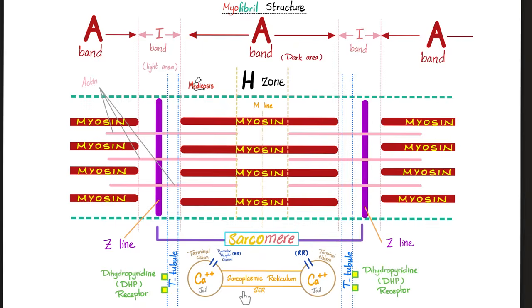Here we have the sarcoplasmic reticulum. This is a modified smooth endoplasmic reticulum. We had two types of ER: rough endoplasmic reticulum and smooth endoplasmic reticulum. The sarcoplasmic reticulum is a modified smooth endoplasmic reticulum. The rough endoplasmic reticulum has a totally different function — it makes proteins with ribosomes and ribosomal RNA.